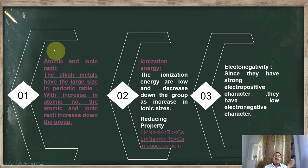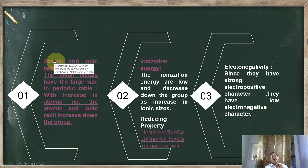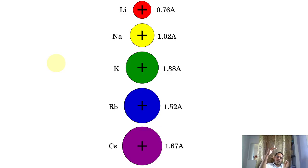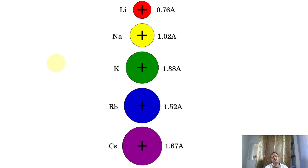Now let us look at atomic and ionic radii. As we have read in periodic properties, as you move from top to bottom in the group, the atomic radius increases, because a new shell is added as you go down. The same is true for ionic radii — ionic radii also increase from top to bottom.